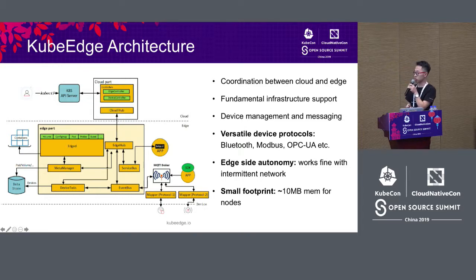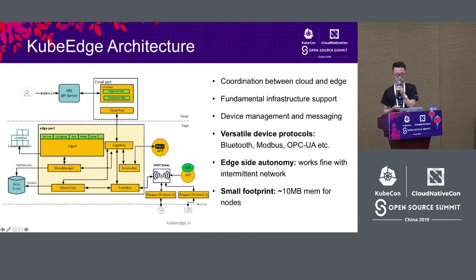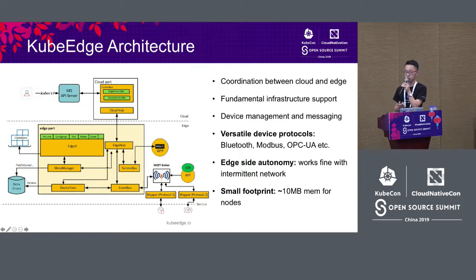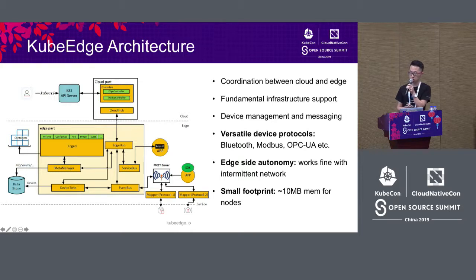Cloud hub and edge hub are based on WebSocket. When you create a WebSocket connection, it can achieve two-way communication. So nodes on edge can be in a private network — you don't need a public IP. As long as you can access the cloud hub, you can consistently communicate with the cloud in both directions. For edge device management, we achieve device management through device twin. When you have a device, you can control it through the device twin and map it on the cloud.